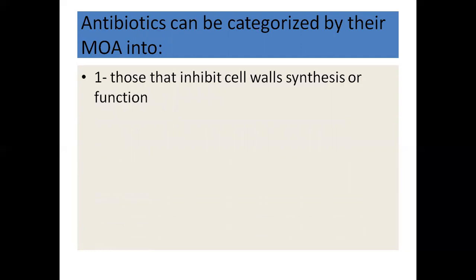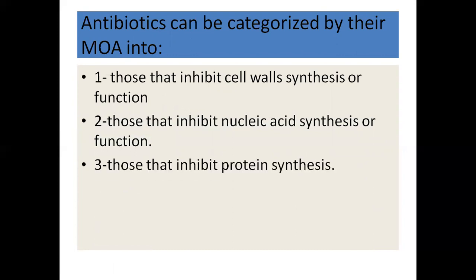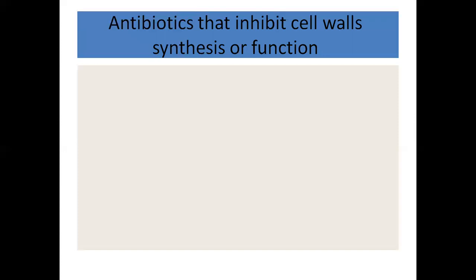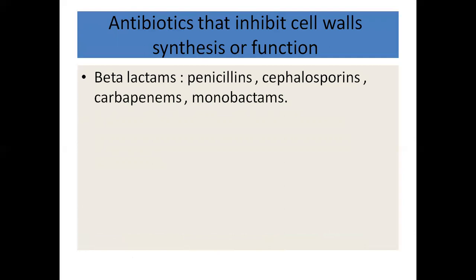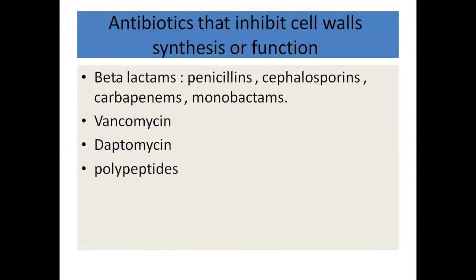Number one are those that inhibit cell wall synthesis or function. Number two are those that inhibit nucleic acid synthesis or function. And number three, those that inhibit protein synthesis. Antibiotics that inhibit cell wall synthesis or function include the beta-lactams — most commonly used in clinical practice — including the penicillins, the cephalosporins, and monobactams, as well as vancomycin, daptomycin, and polypeptides.